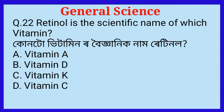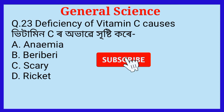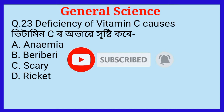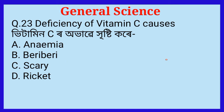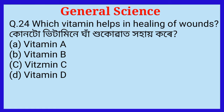Question number twenty-two: Retinol is the scientific name of which vitamin? The answer is option A, vitamin A. Question number twenty-three: Deficiency of vitamin C causes which disease? The answer is scurvy. Question number twenty-four: Which vitamin helps in healing of wounds? The answer is option C, vitamin C.